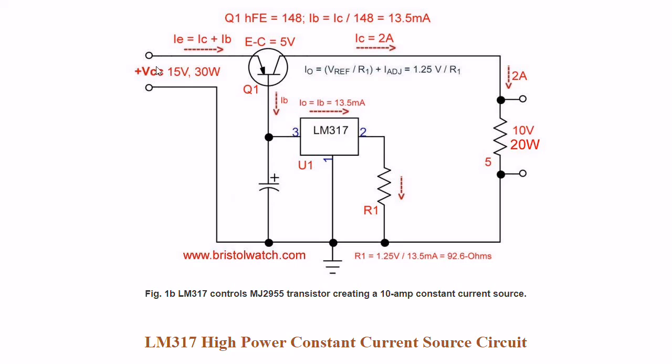How this works is the LM317 acts as a constant current source. This controls the base current through this pass transistor, and the base current is multiplied by the HFE of the transistor and becomes the output current.